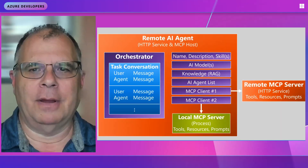Hi everybody. I'm Jeff Richter. I'm an architect on the core AI platform and tools team at Microsoft. I've been working on AI agents, the Model Context Protocol, and the A-to-A protocol. I wanted to share a brief video that shows the architecture of these various AI agent components together.